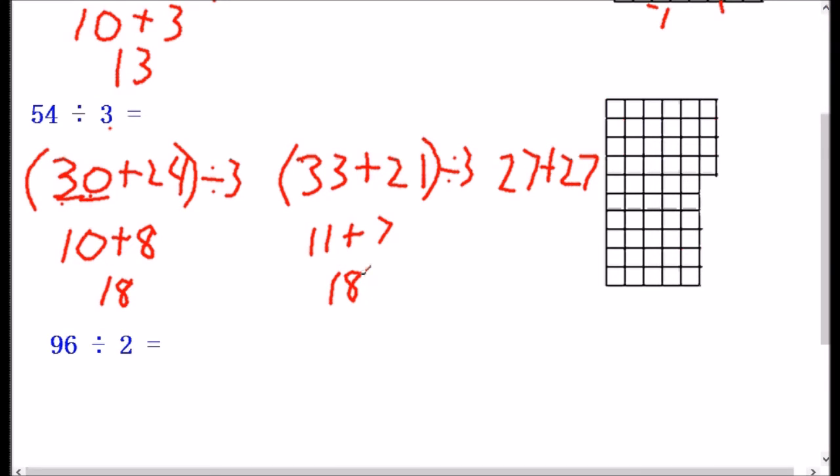And in this last case, we turned 54 into 27 plus 27. And we're going to take that and divide it by 3. And we get 9 because 27 divided by 3 is 9. And the other 27 divided by 3, remember, we have to divide all the pieces, is another 9. And 9 plus 9 is still 18.